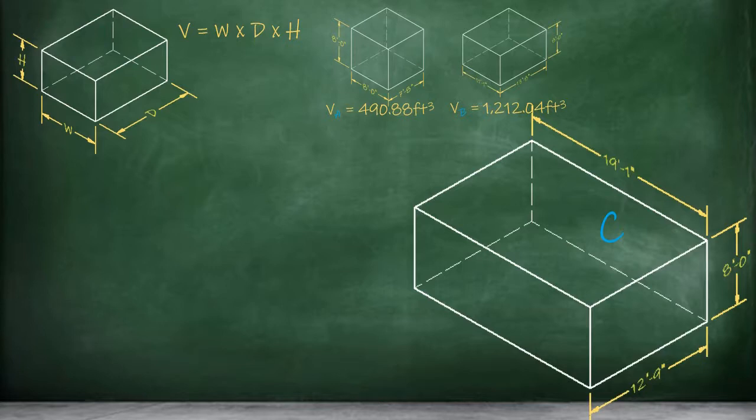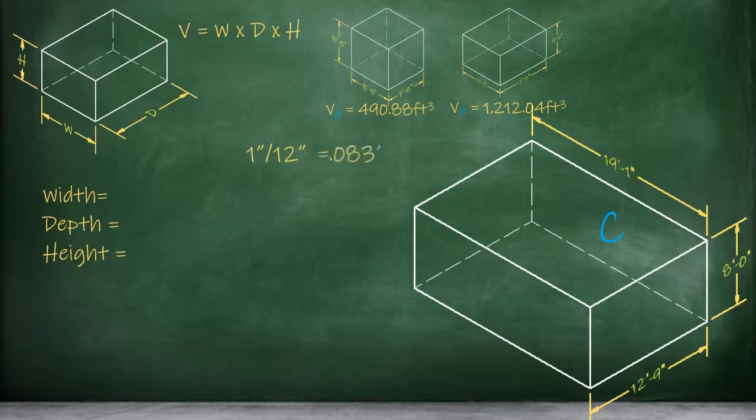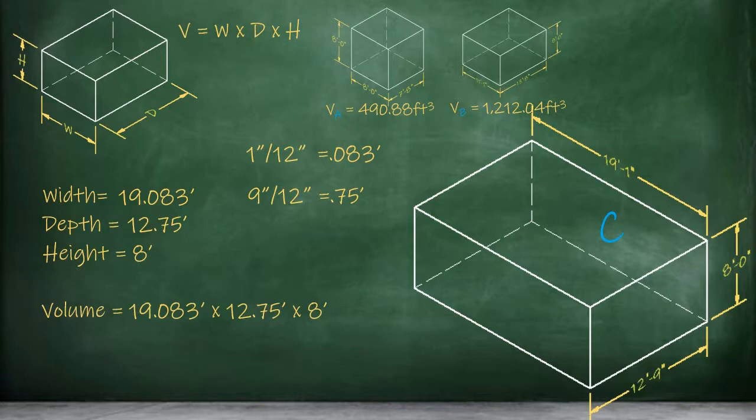Now we can perform the same steps to find the volume of part C. Our width dimension is 19 feet 1 inch, so we convert the 1 inch portion into decimal feet by dividing 1 by 12, which equals 0.083 feet, and we add this back together with our 19 whole feet to get a width dimension of 19.083 feet. Our depth dimension is 12 feet 9 inches, so we'll need to convert the inch portion. 9 inches divided by 12 inches equals 0.75 feet. When we add this back together with the 12 whole feet, we get a depth dimension of 12.75 feet. Our height dimension is still 8 feet, so no need to convert. 19.083 feet times 12.75 feet times 8 feet equals a volume of 1,946.47 cubic feet for part C of our space.